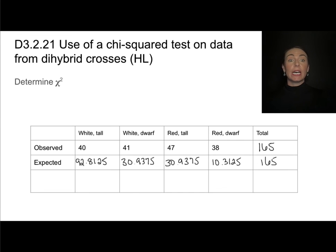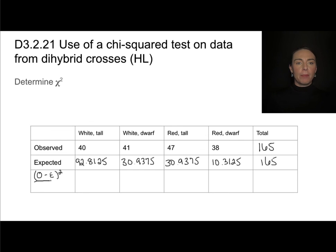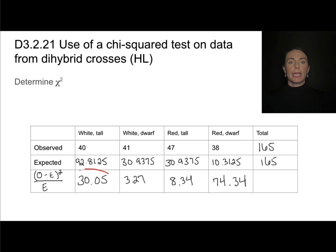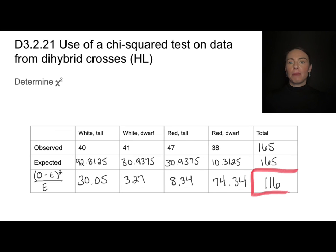Now we calculate chi-squared. The formula is: for each category, take the observed value minus the expected value, square that difference, and divide by the expected value. Do this for all four categories and sum the results. After rounding, adding all four values together gives a chi-squared value of 116. This total chi-squared value is the only number we need from the entire table.